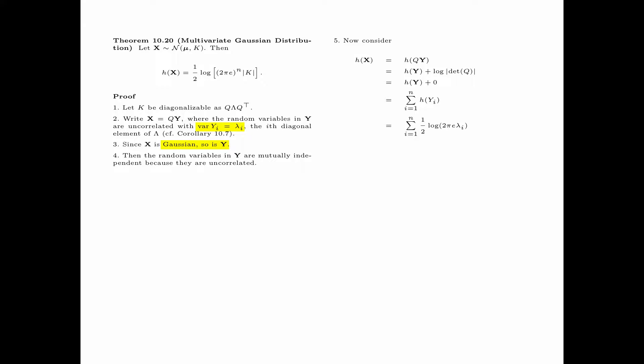Since y_i is Gaussian with variance equal to lambda_i, the entropy of y_i equals one half log of 2 pi e times lambda_i. We take the one half outside the summation and write the summation of the logarithm as the logarithm of the product. Specifically, there are n occurrences of 2 pi e, and we have the product of lambda_i for i equals 1 up to n. The product of lambda_i equals the determinant of the matrix lambda, because lambda is a diagonal matrix.